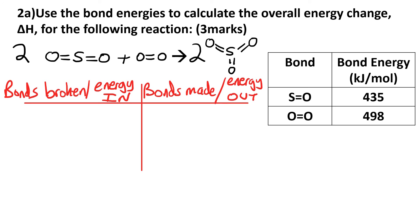We've got four S-O bonds. The reason we've got four is we've got that big 2 in front of the molecule. And we've also got an O double bonded to O. So when we add up all of those bonds, it comes to 2238 kilojoules per mole energy in.